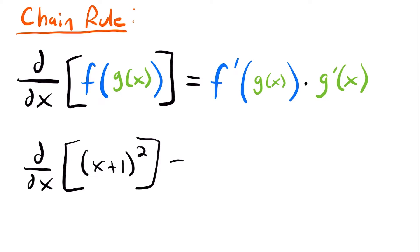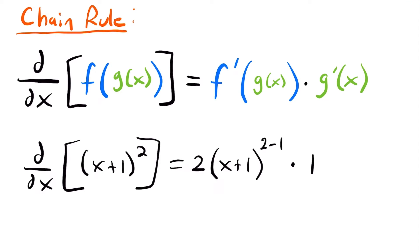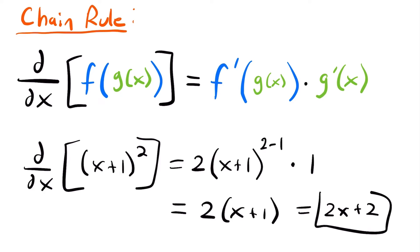Taking the derivative, we start with the derivative of the outer function — x squared — using the power rule: we bring down the 2 and multiply by the inner function x plus 1, keeping it unchanged, giving us 2 times x plus 1 to the first power. Then we multiply by the derivative of the inner function x plus 1, which is just 1. So the derivative simplifies to 2 times x plus 1, or equivalently 2x plus 2.